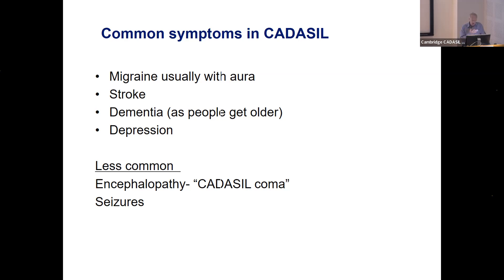Less common things in CADASIL include what's called CADASIL coma — a very strange presentation where people get a migraine attack and then become rather confused and sometimes comatose. Everybody worries a great deal and they go to hospital; often people think it's encephalitis or a brain infection. But it gets better on its own, and that's an important thing to realise — sometimes people get very concerned medically about it. Seizures can also occur, although they're not very common.